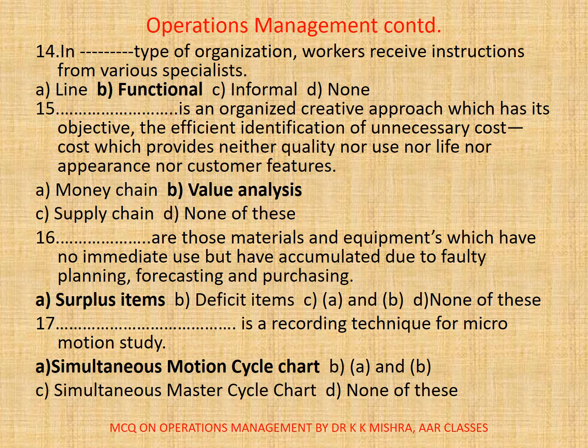16. Dash are those materials and equipment which have no immediate use but have accumulated due to faulty planning, forecasting, and purchasing. A. Surplus items. B. Deficit items. C. A and B. D. None of these. The correct option is A. Surplus items.